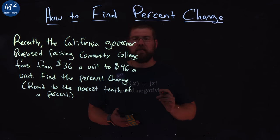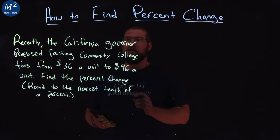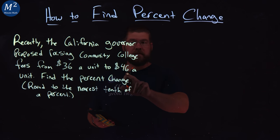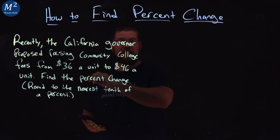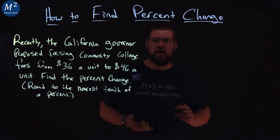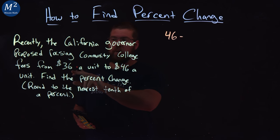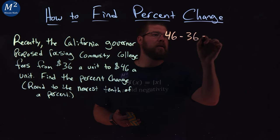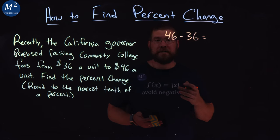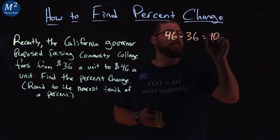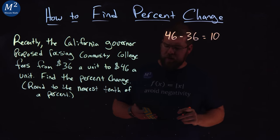So, in finding percent change, we're going to identify the new value and the old value. Our new value is $46, and our old value is $36. We want to take our new value, $46, and subtract our old value from that. $46 minus $36 is 10.